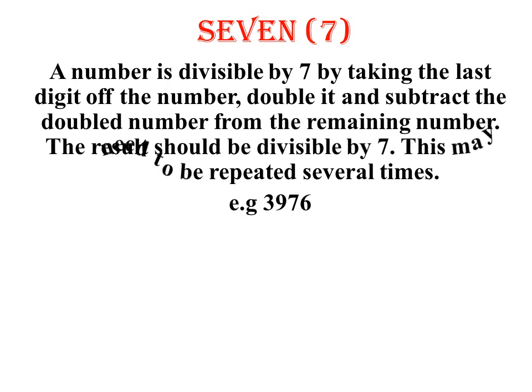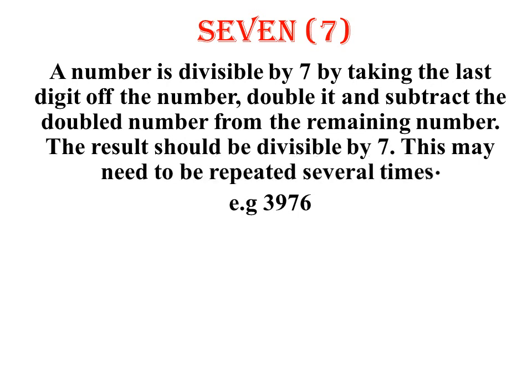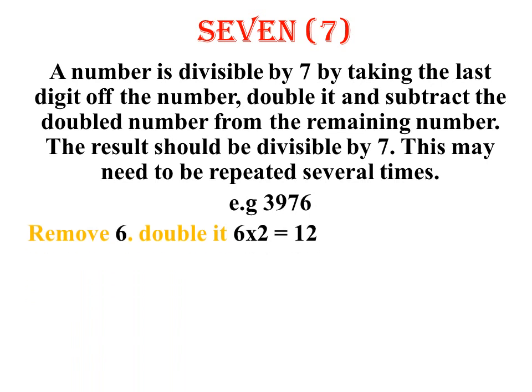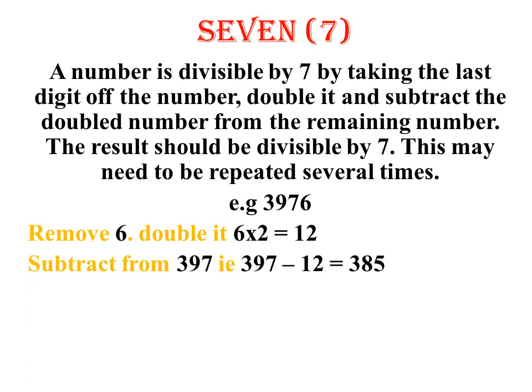This procedure may be repeated several times. If we look at the example 3976 — is it divisible by 7? The first step: remove the last digit. Our last digit is 6. If we remove it and double it, we get 12. The remaining number is 397. Then subtract 12 from 397 — you will get 385.